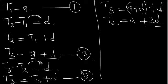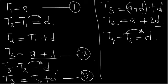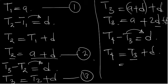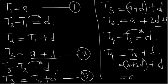The fourth term minus the third term also gives the common difference. If you move the third term to the other side, you have the fourth term equal to the third term plus D. From equation 4, the third term is A plus 2D, so A plus 2D plus D gives you A plus 3D. So this is the fourth term — let's call this equation 5.